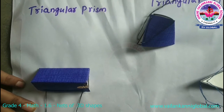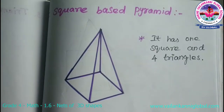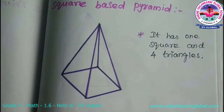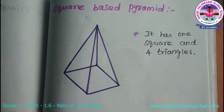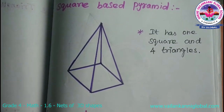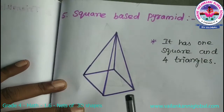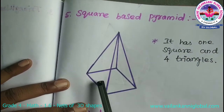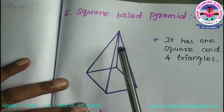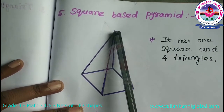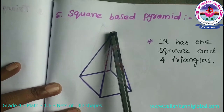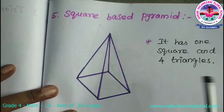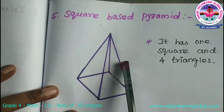This is the triangular prism. The next shape is square-based pyramid. For the square-based pyramid, in the base one square shape is there and all the edges are connected to one point. So it has one square and four triangles.